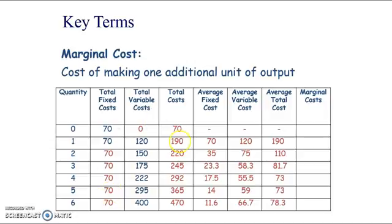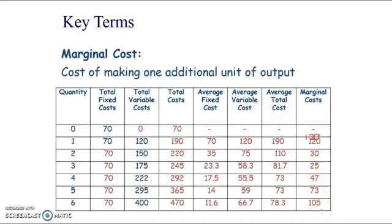Marginal cost is the change in total costs from producing one level of output to the next. Going from zero to one unit costs 120 extra. Going from one to two units only costs 30 more. So we can see marginal costs fall at first and then start to rise — explained in the diminishing returns presentation. Some textbooks place the marginal cost figure between rows rather than on a row.